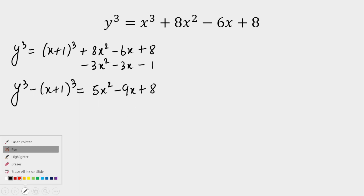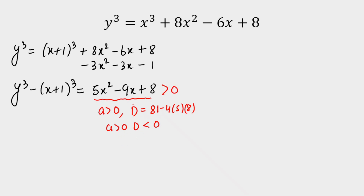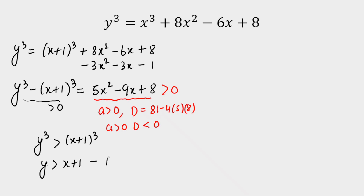Notice that on the right-hand side, this quadratic has coefficient of x² greater than zero, and the discriminant b² - 4ac is less than zero. When a > 0 and discriminant < 0, the expression is always positive. Since the right-hand side is always positive, the left-hand side must also be positive, meaning y³ > (x+1)³, so y > x+1. Let's call this our first inequality.